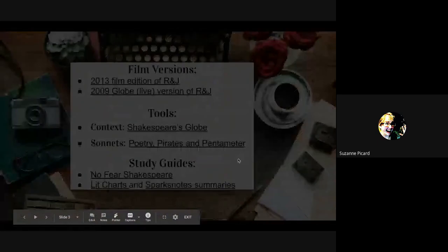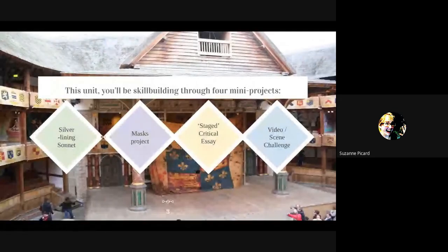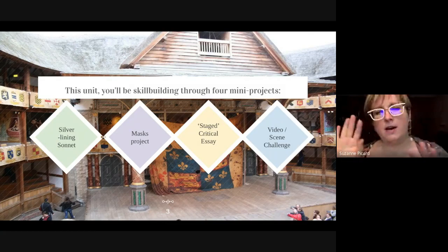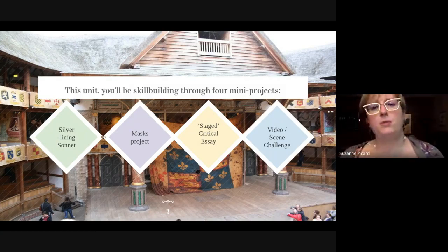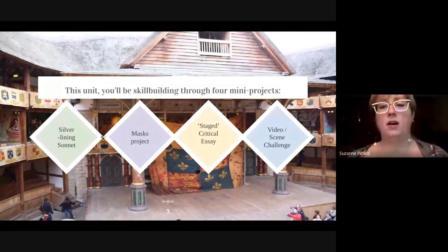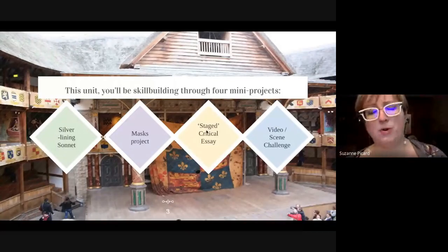In the unit there are four major assessments that will contribute to your skill building and help raise your average in English 10-1 or English 10 IB. The first is this week's silver lining sonnet. The second is a masks project where you'll make a symbolically decorated mask for a character of your choice — you'll get directions in week two. Week three is either a video scene challenge or some critical writing about the play. That's really how we wrap Romeo and Juliet — it'll probably take about five or six of the remaining weeks, then a final week for discussion groups.